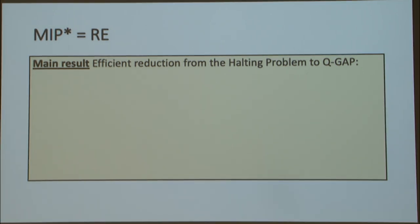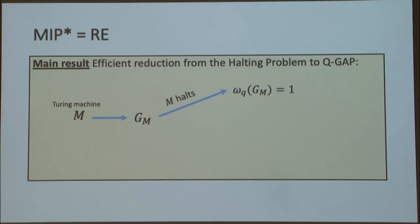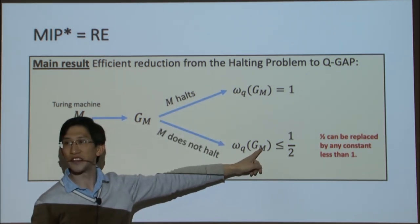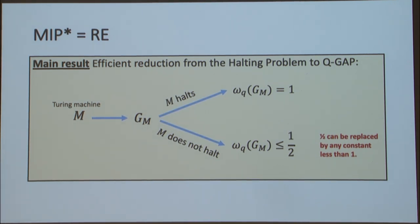Our main result shows an efficient reduction from the halting problem to QGAP: a transformation taking a Turing machine M, converting it to a nonlocal game where if M halts the quantum value is 1, and if M doesn't halt the quantum value is at most 1/2. This 1/2 threshold isn't essential — any constant less than 1 works. There exist specific Turing machines for which the quantum value is 1/2 while the commuting operator value is 1, but for arbitrary non-halting machines this is harder to establish.